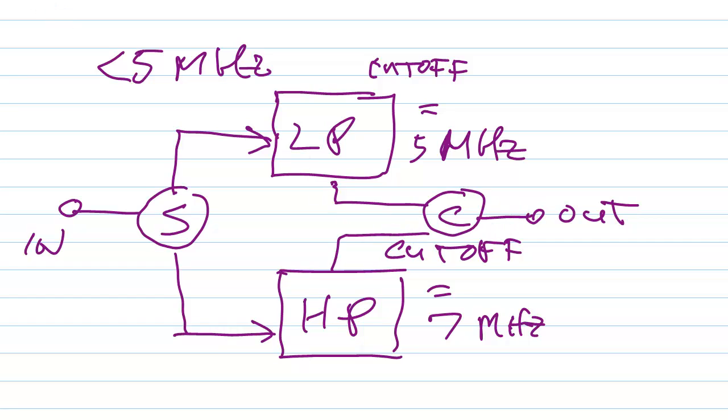Now, on the other hand, if you have a frequency of more than 7 megahertz, the signal is going to get choked off by this low pass filter, so it isn't going to be able to get through here. But it will get through the high pass filter because the cutoff frequency is 7 megahertz. So anything above that will get through.